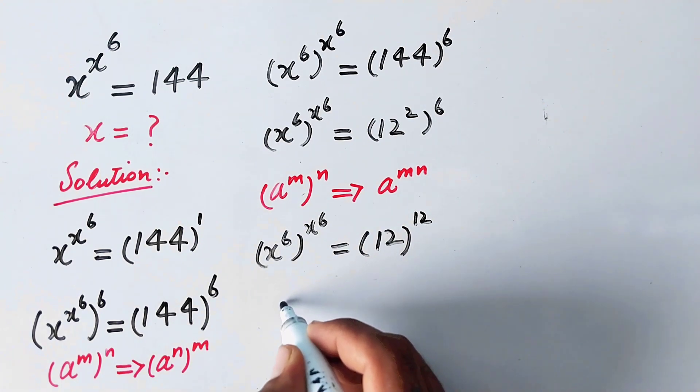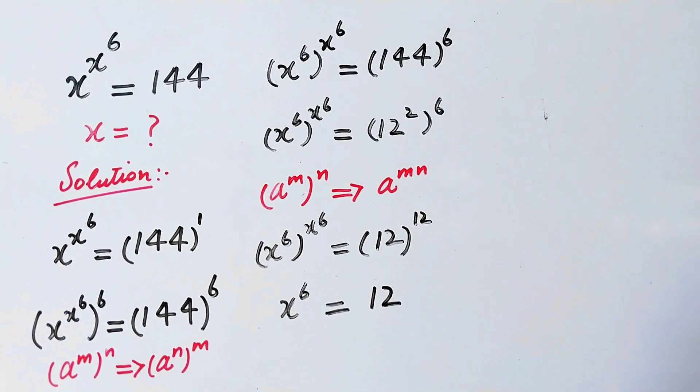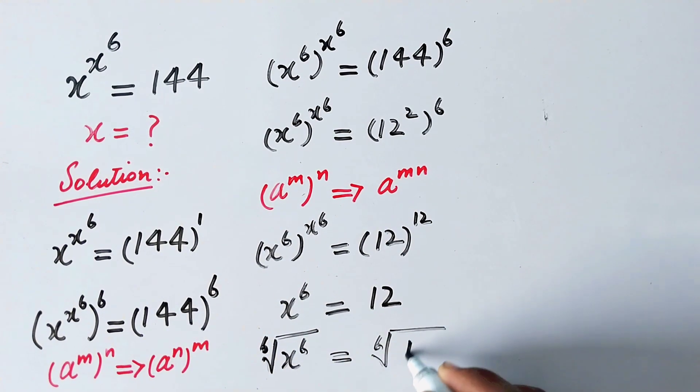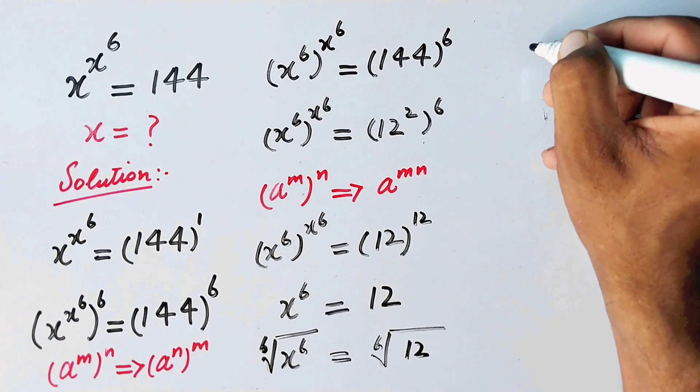So we can compare and write x^6 = 12. Now what we are going to do is take the 6th root on both sides, and it will become the 6th root of x^6 equals the 6th root of 12.